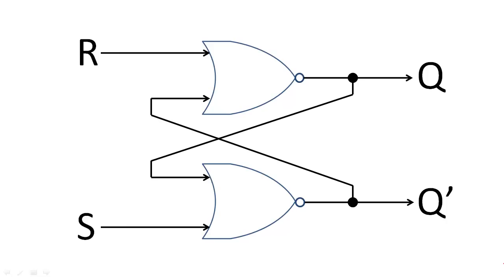The circuit is composed of two cross-coupled NOR gates where the state that we are storing is called Q and the complement of the state is stored in Q prime.